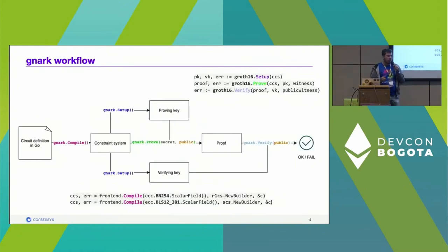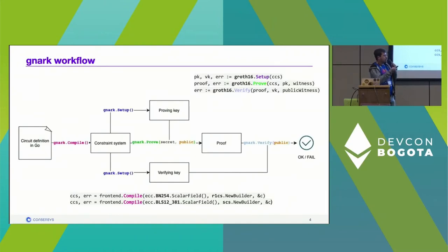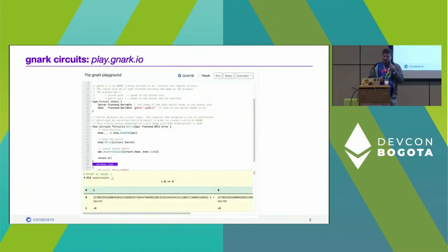The usual workflow for SNARKs is the same in gnark: you write a circuit in plain Go — not in a DSL — then compile it to a constraint system, and then call setup, prove, and verify APIs. It is fairly easy to change the elliptic curve and constraint system. For example, you can swap BN254 for BLS12 and R1CS for SCS (sparse constraint system for PLONK). There is a playground where you can try this in the browser.